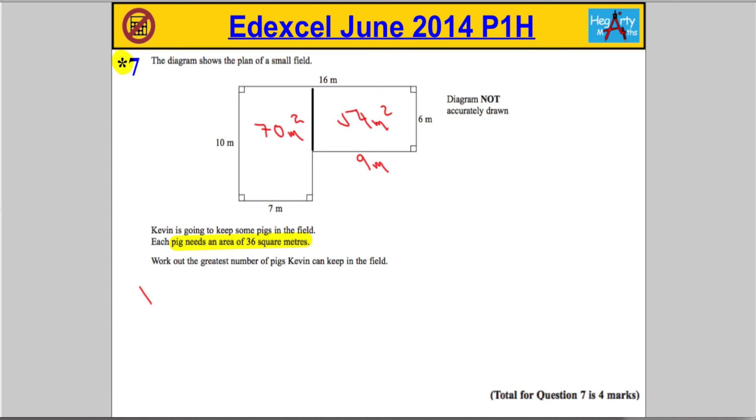That means the total area—let's write down the total area. Total area equals 70 plus 54, giving us 4, and then 7 and 5 is 12, 124 metres squared.